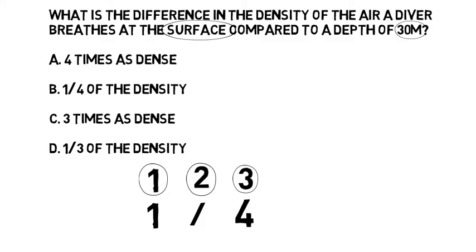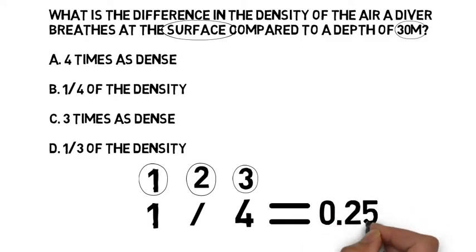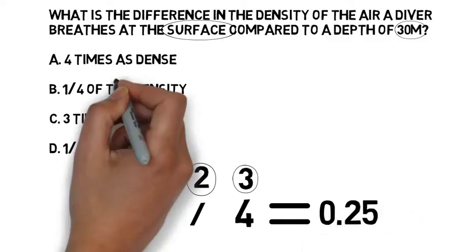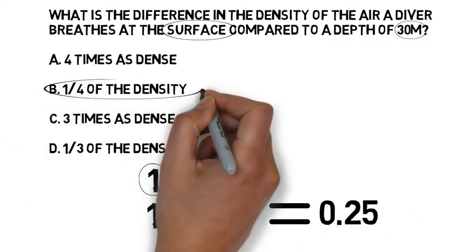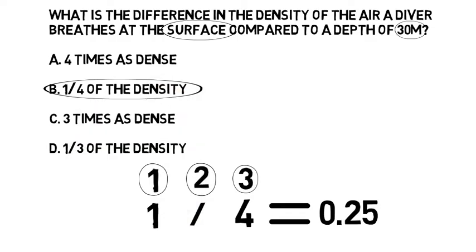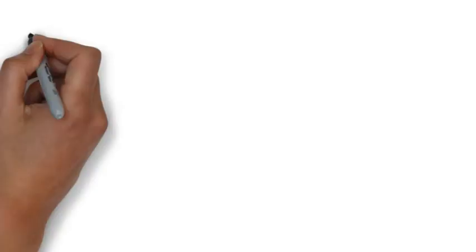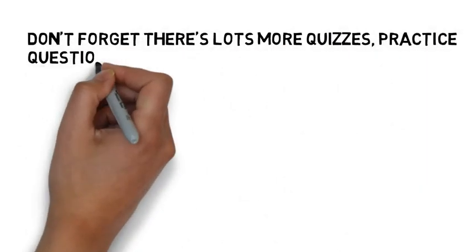Now we could get out a calculator and work out what one divided by four is. It's 0.25. But looking at the answers we've got four times as dense, a quarter of the density, three times as dense, and a third of the density. There is no 0.25 but there is one over four, something that we've got written on our piece of paper staring at us. So that is the correct answer.